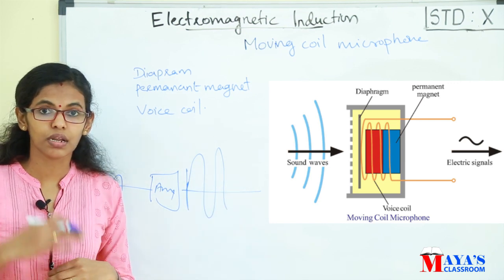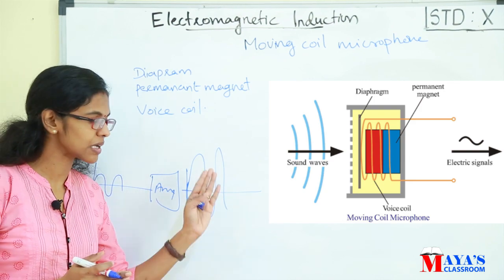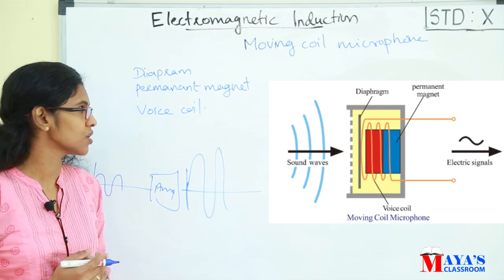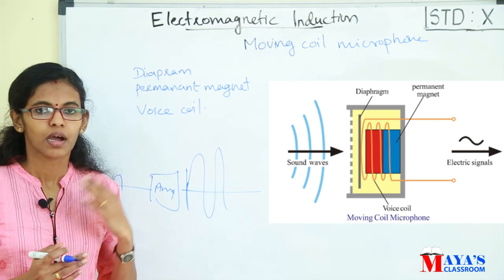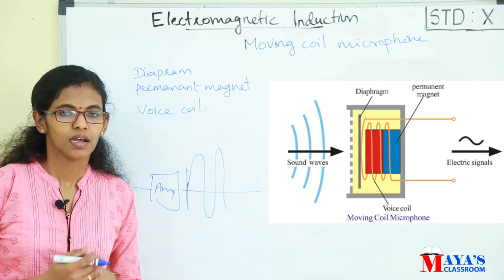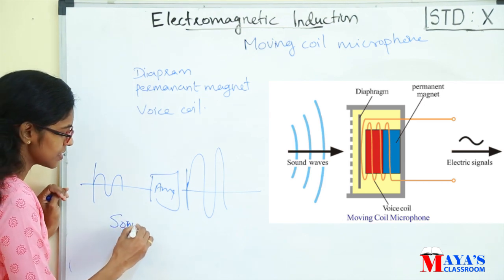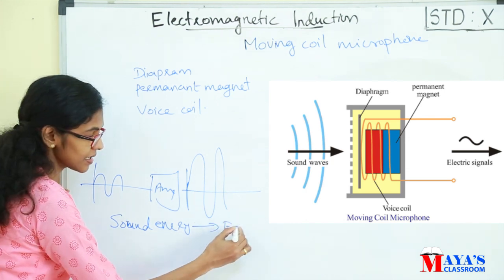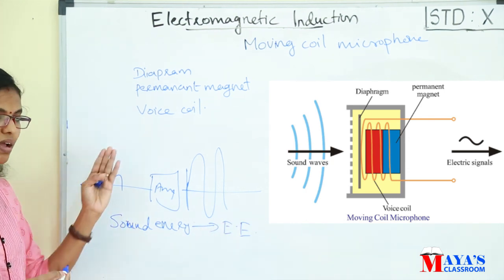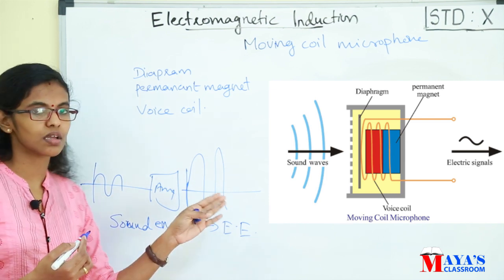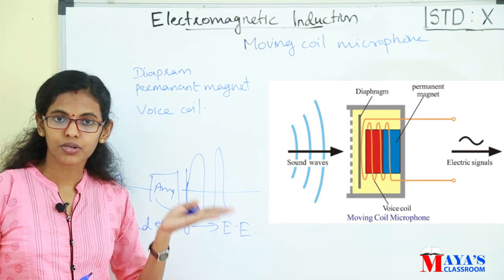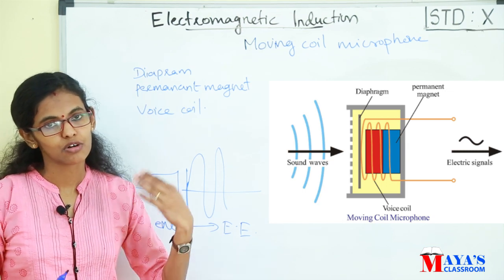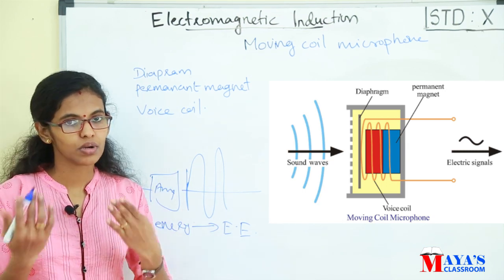The amplified signals are sent to loudspeakers. That is the working of the moving coil microphone. The energy conversion is: sound energy is converted to mechanical energy, then to electrical energy. The electrical energy is amplified and drives the loudspeaker, which reproduces the sound energy.